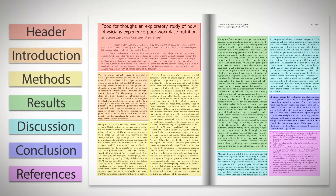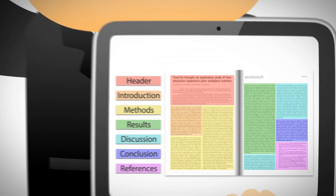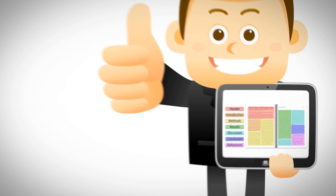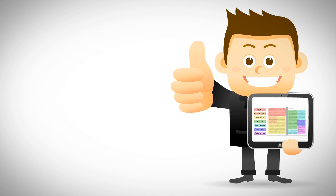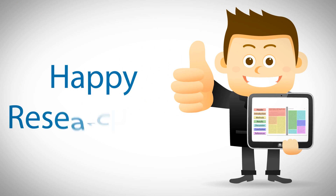So, there you have the outline of a scholarly research article. This should make reading and skimming articles easier. Happy researching!